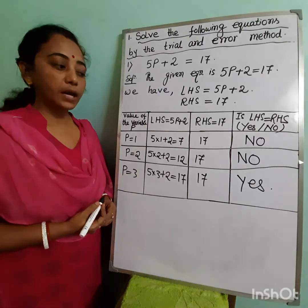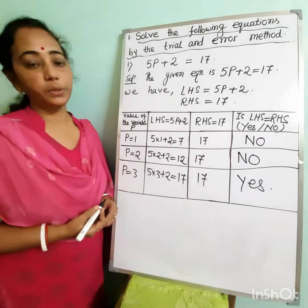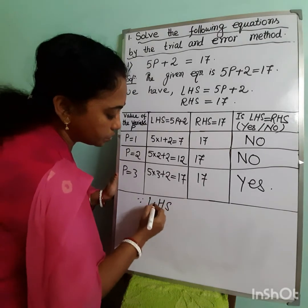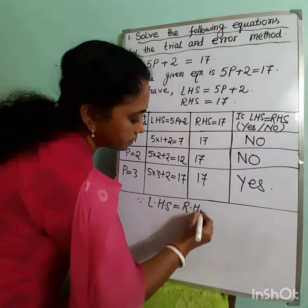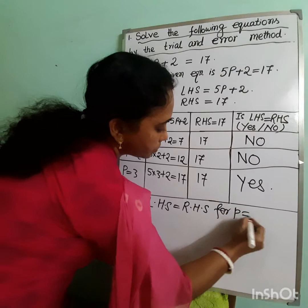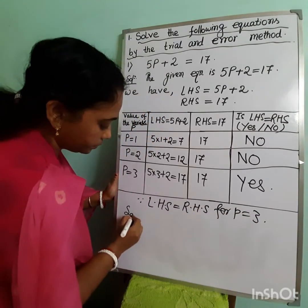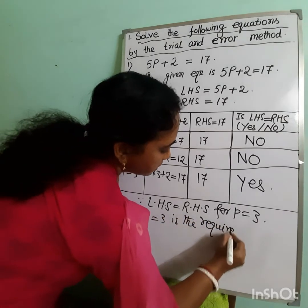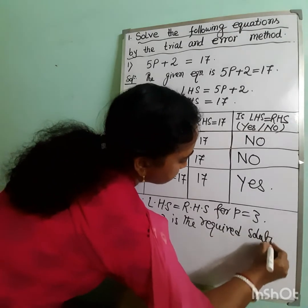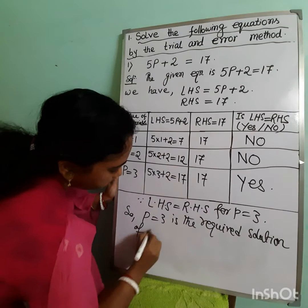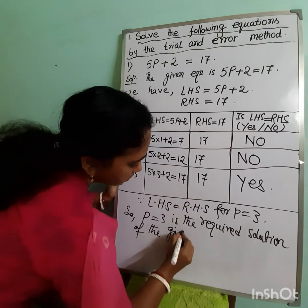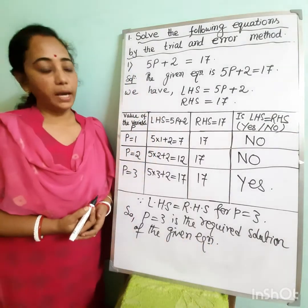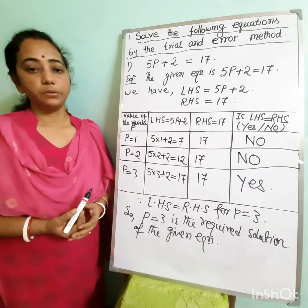For p = 3, left hand side and right hand side both give the same value, so we can write: since left hand side equals right hand side for p = 3, p = 3 is the required solution of the given equation.